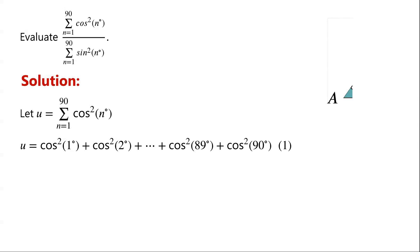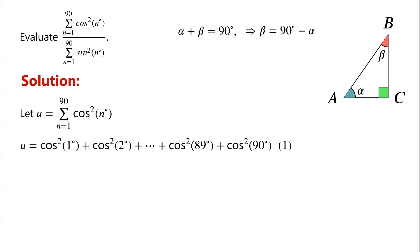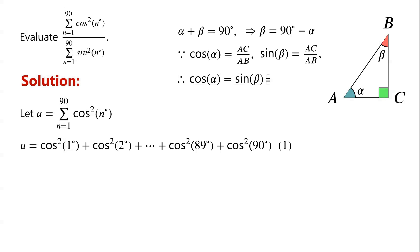We know that for a right-angled triangle ABC, let alpha and beta be the other two angles. So alpha plus beta equals 90 degrees, meaning beta equals 90 degrees minus alpha. Because cosine of alpha equals AC over AB, and sine of beta also equals AC over AB, so cosine of alpha equals sine of beta, which is equal to sine of 90 degrees minus alpha. This is called the cofunction identity.